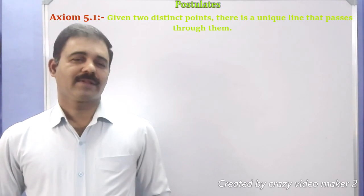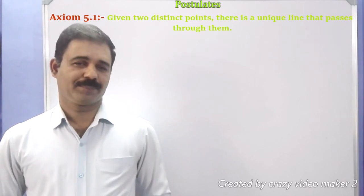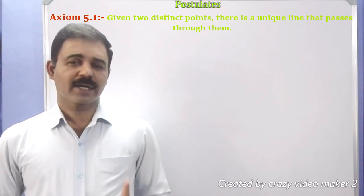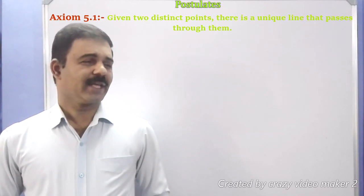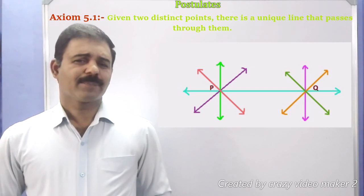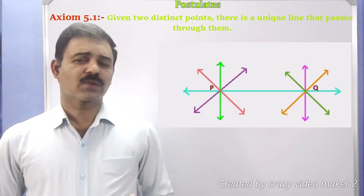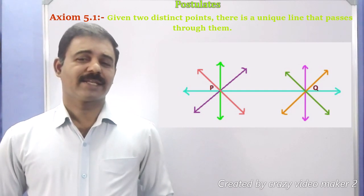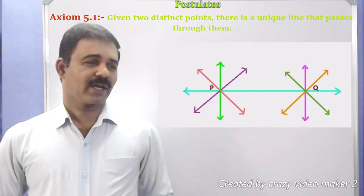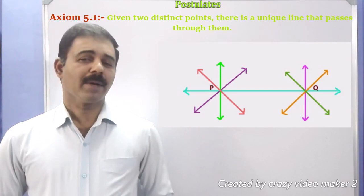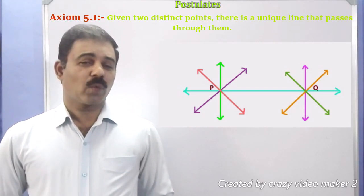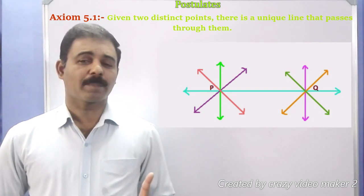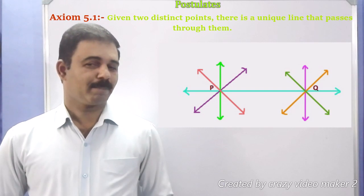This is the result of Axiom 5.1, which states that given two distinct points, there is a unique line that passes through them. Note there is a point P — there are multiple lines that can pass through point P. Similarly, there is another point Q, and multiple straight lines pass through Q. But when we consider points P and Q together, there is only one unique straight line PQ passing through both P and Q.